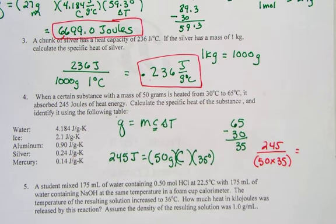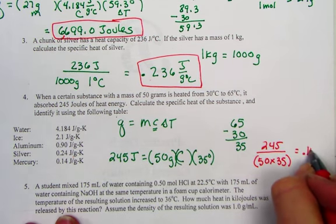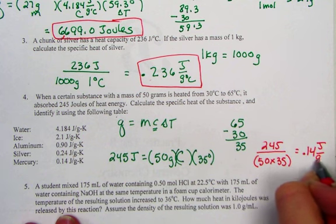So we would hit that as joules, divide by mass, divide by the change in temperature. And when I hit 245 divided by 50, divide by 35, we get a specific heat of 0.14 joules per gram degree Celsius.